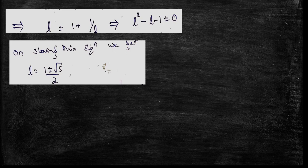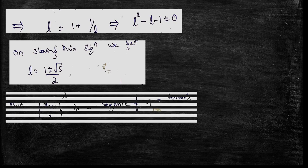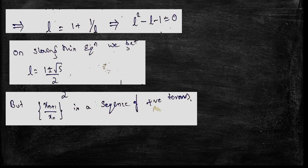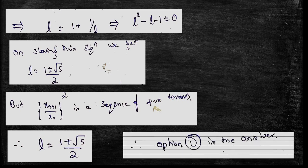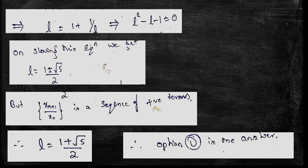Solving the equation, the value is (1 plus or minus root 5) divided by 2. But since the sequence has positive terms, the negative root is rejected. So the limit value is L equals (1 plus root 5) divided by 2. Therefore, option D will be the correct answer.